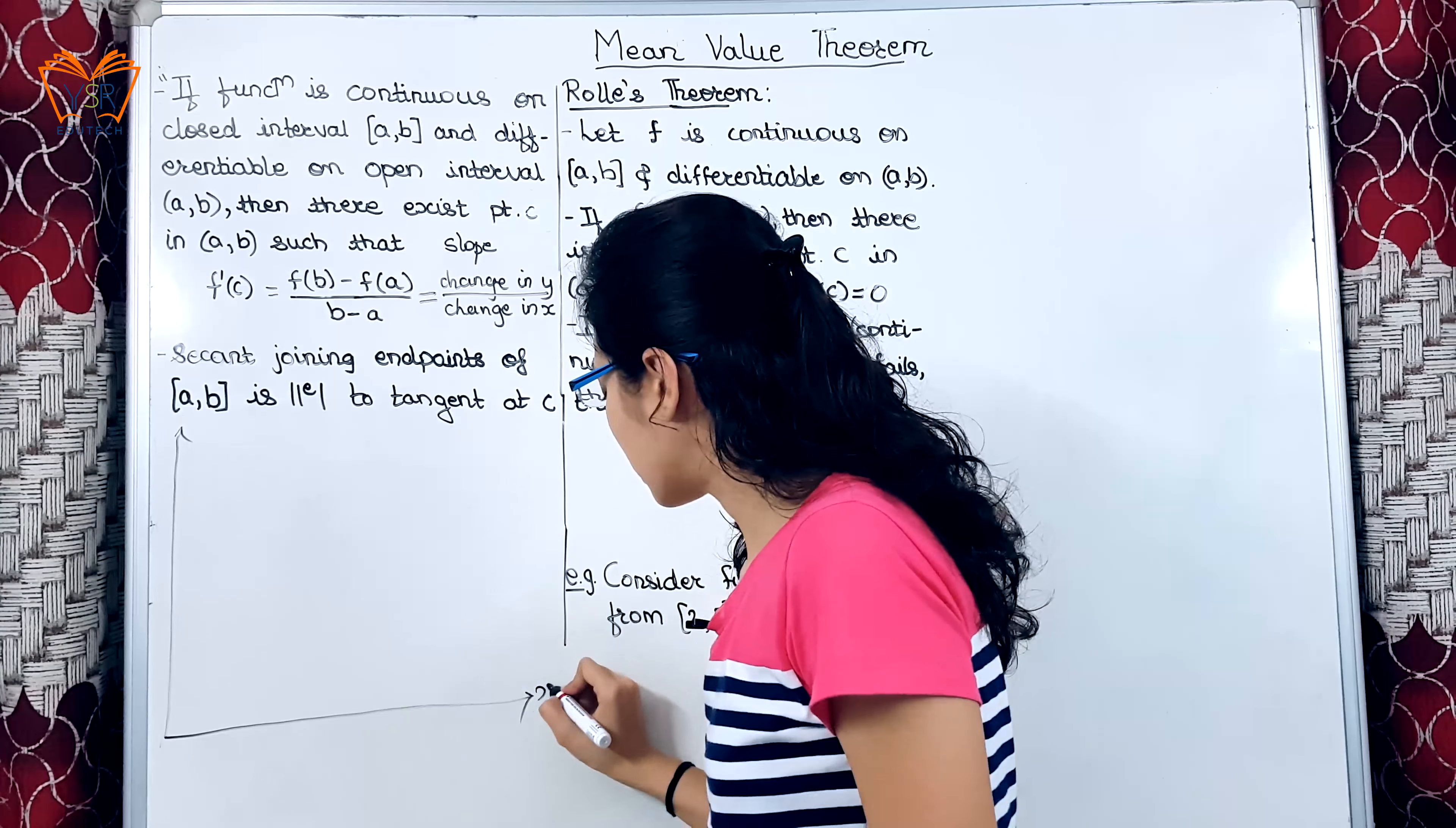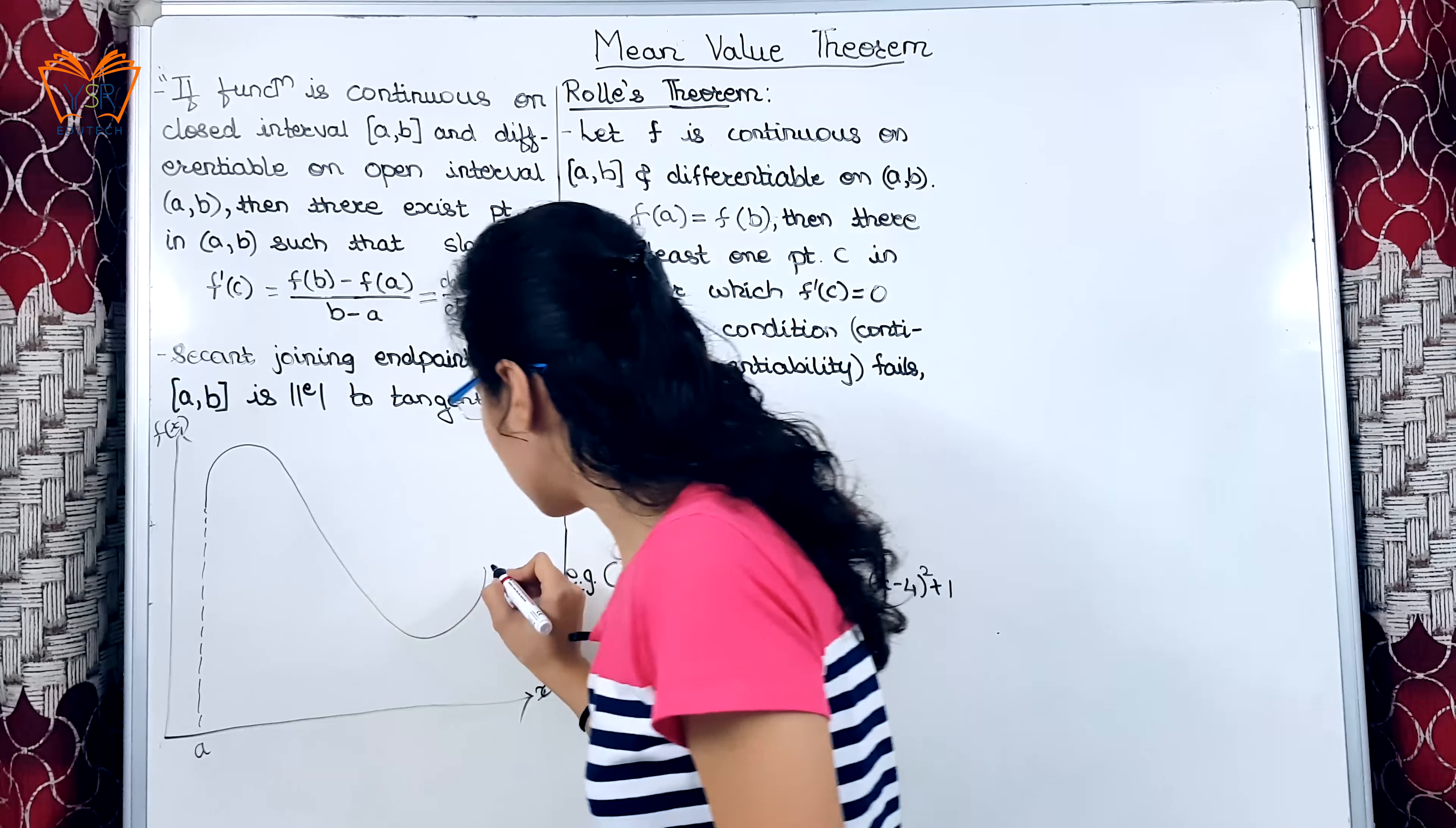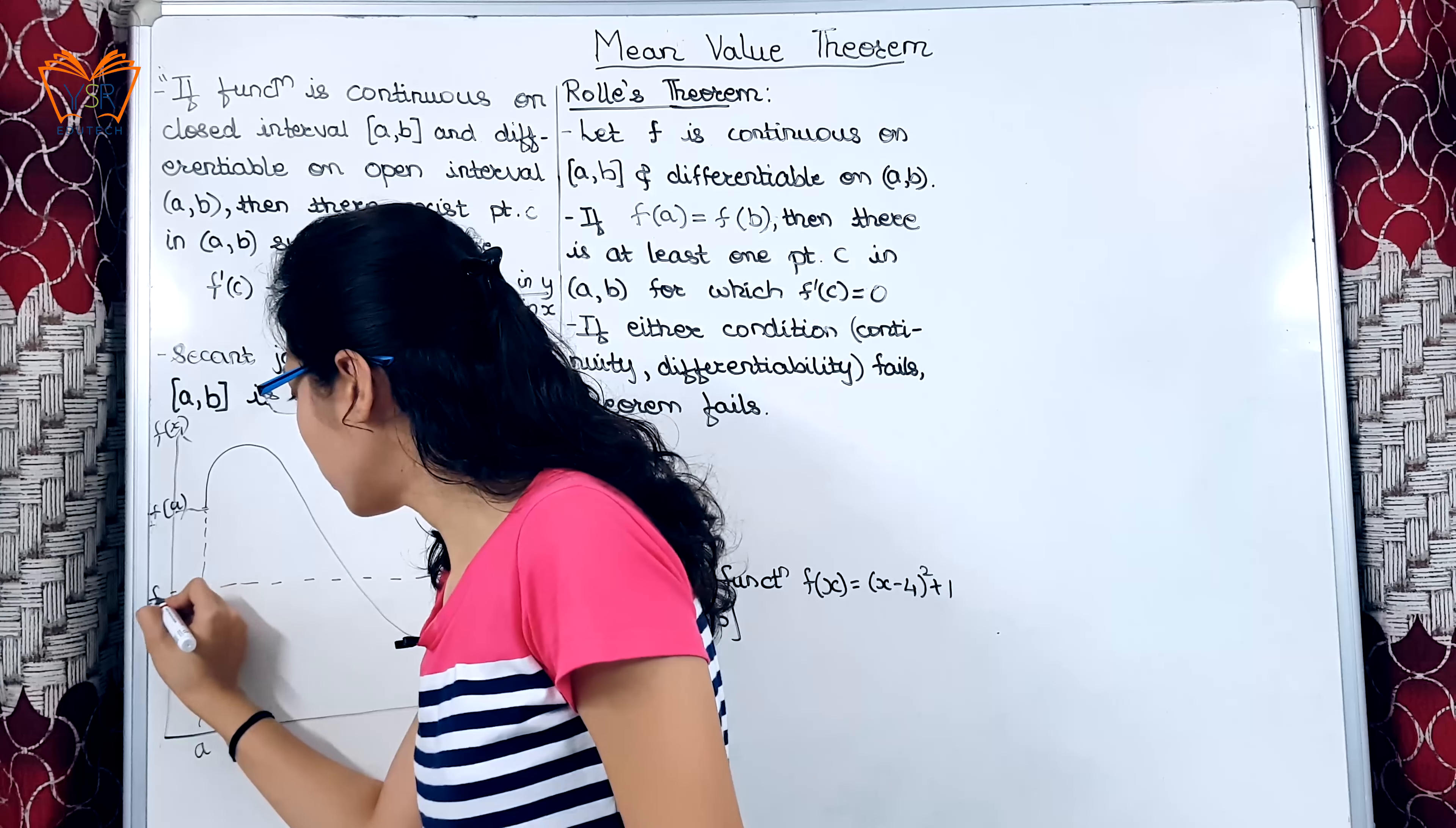We will understand this statement through graphical representation. This is x, f(x), suppose this is a random function. This is our point a, this is b.